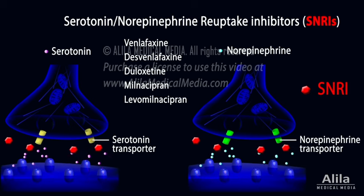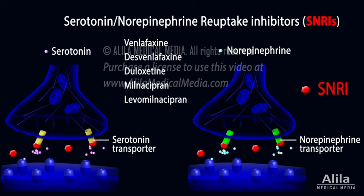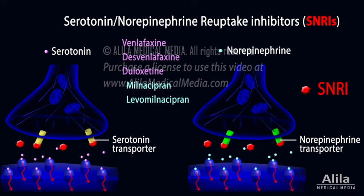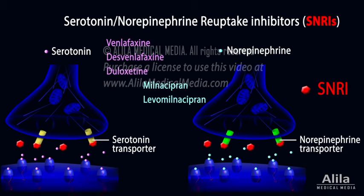SNRIs inhibit the reuptake of both serotonin and norepinephrine. Different drugs in this class exhibit different levels of selectivity among the two chemicals.